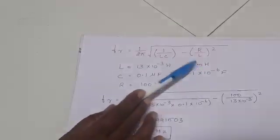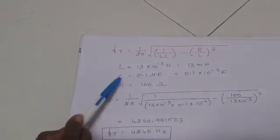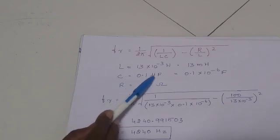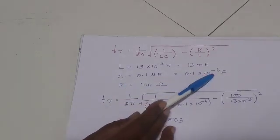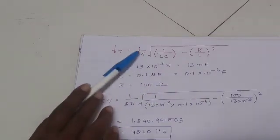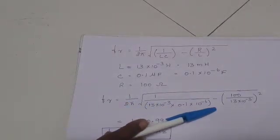The L value is 13 millihenry. For milli, we have taken 10 power minus 3, and C is equal to 0.1 microfarad. Micro means 10 power minus 6, and R is equal to 100. As per the formula, I substituted everything in this.